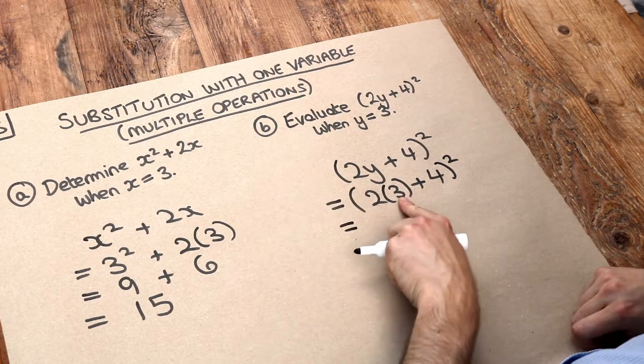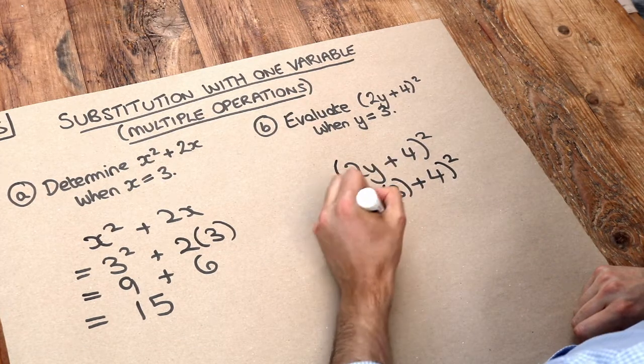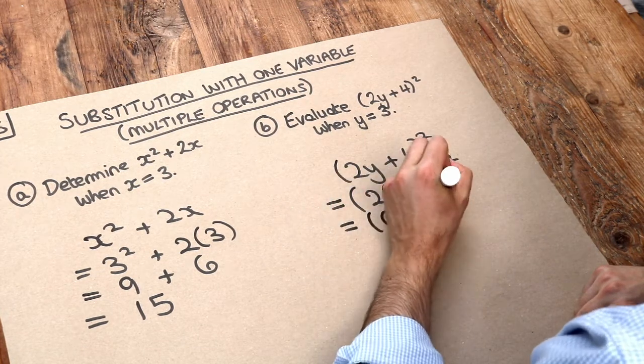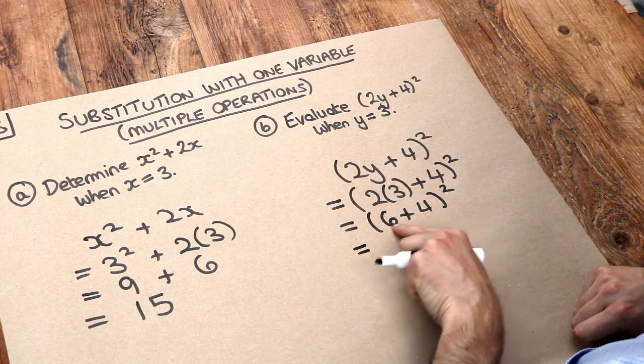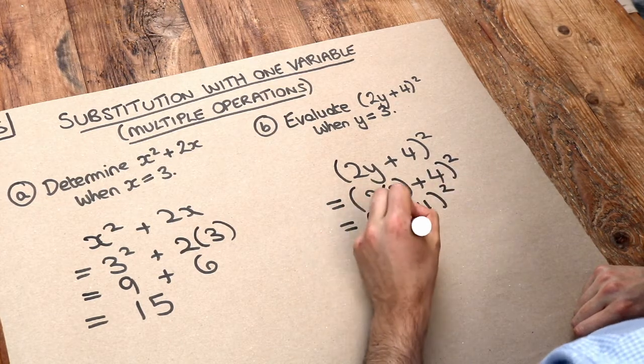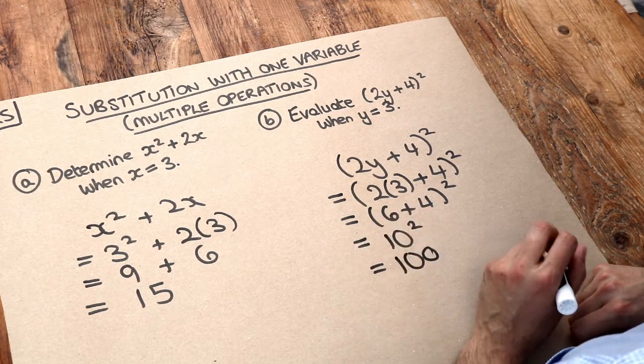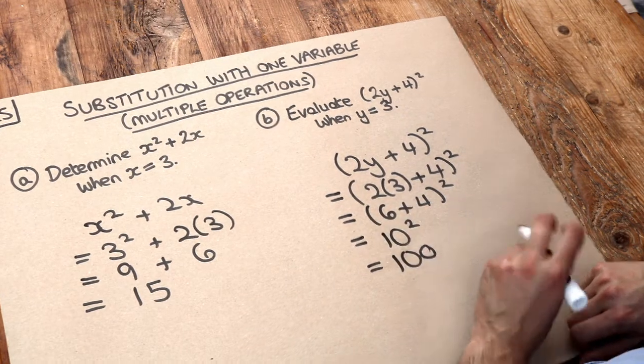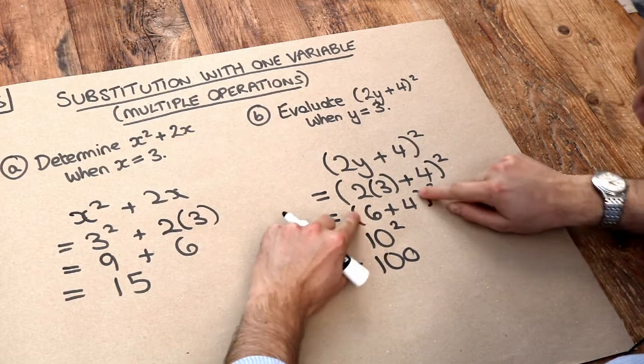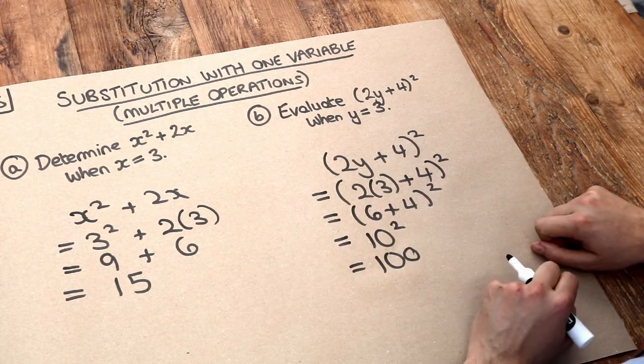Now 2 times 3 is 6, so it's 6 plus 4 squared. 6 plus 4 is 10, and we've got 10 squared, and 10 times 10 is 100. Remember to use BIDMAS here, so we need to do the content of that bracket before we do the squared, for example.